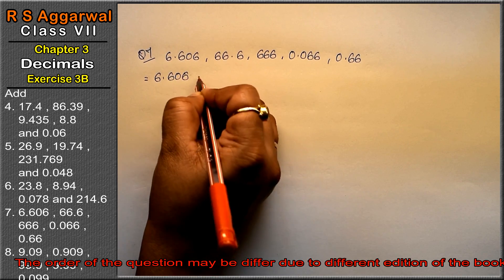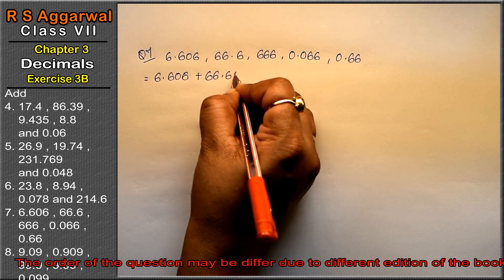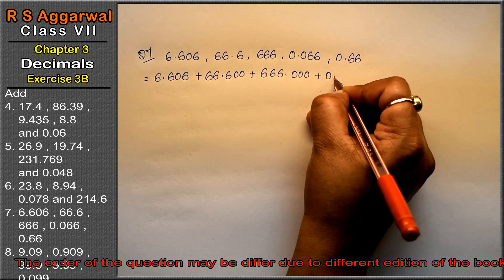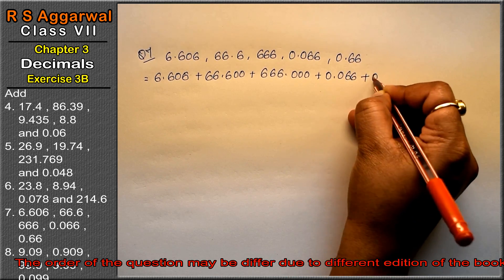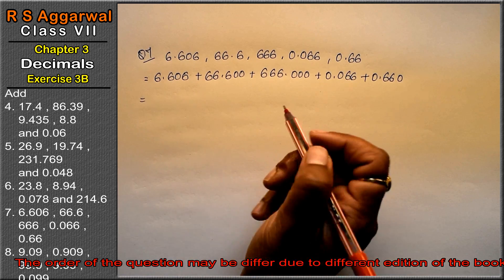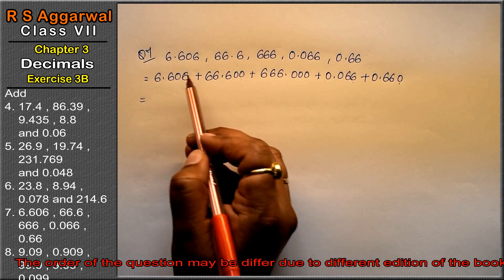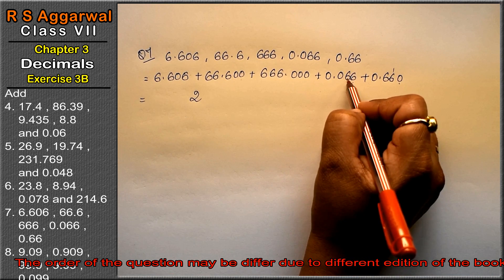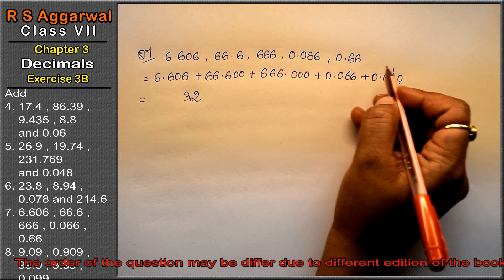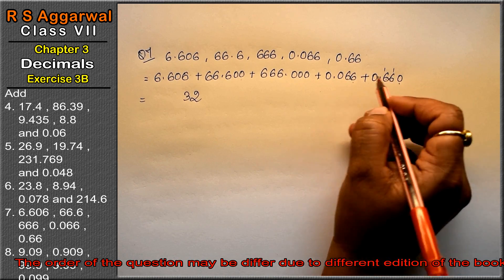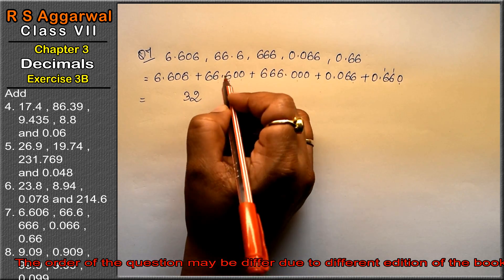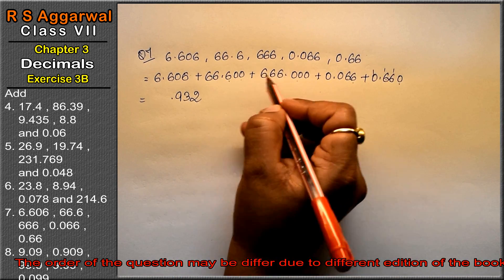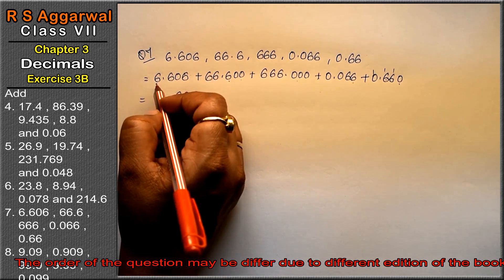6.606 plus 6.606 plus 6.606 plus 6.606 plus 0.066. Now let's add. 6 and 6 is 12, carry 1. 7 and 6 is 13, write 3 carry 1. 7 and 6 is 13; 13 and 6 is 19, write 9 carry 1. 7 and 6 is 13; 13 and 6 is 19.